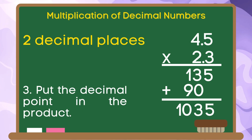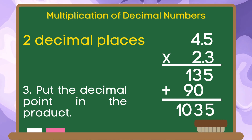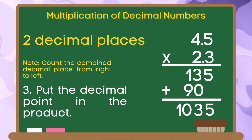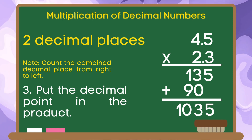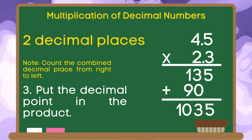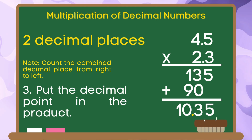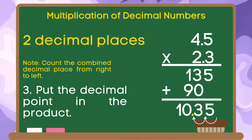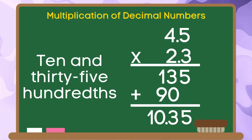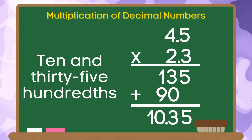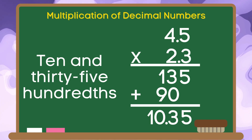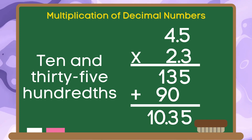For step 3, we are going to put the decimal point in the product. Since we have 2 decimal places in our factors, we are going to move 2 decimal places from right to left in our product. 1, 2. The position of our decimal point in the product is between 0 and 3. Therefore, if we are going to multiply 4 and 5 tenths by 2 and 3 tenths, the product is 10 and 35 hundredths.